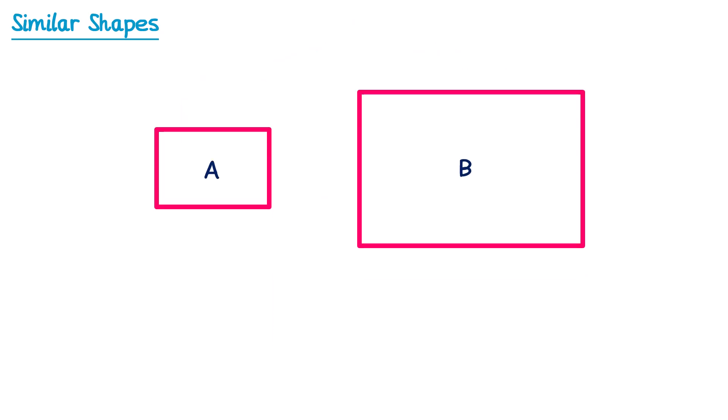In exam questions you're often given two or more shapes — they might be called shape A and shape B. You'll be given the lengths of one of the shapes, and for the other you'll have something missing, so we've got the height of 8 but we don't know the width. The question will say that these shapes are mathematically similar, so we know one of them is an enlargement of the other. To work out how much it's been enlarged by, we find two sides that we do have information for.